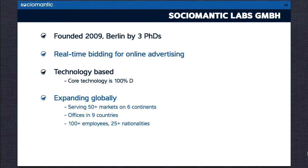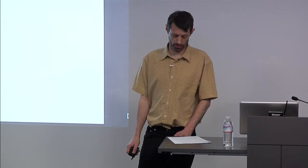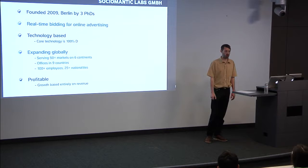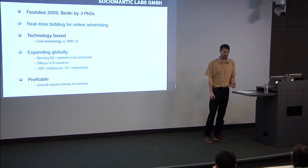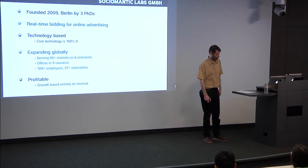Like D, we're global. And thirdly, Sociomantic is profitable. Anybody can grow at an incredible rate if you throw hundreds of millions of dollars at them, but Sociomantic has not had that. We've had no investors at all — no debt, no equity, not a cent. This growth has been entirely based on cash flow. So here we have a company that's entirely based on D, nothing else, and has never had any investment and has expanded over the globe.